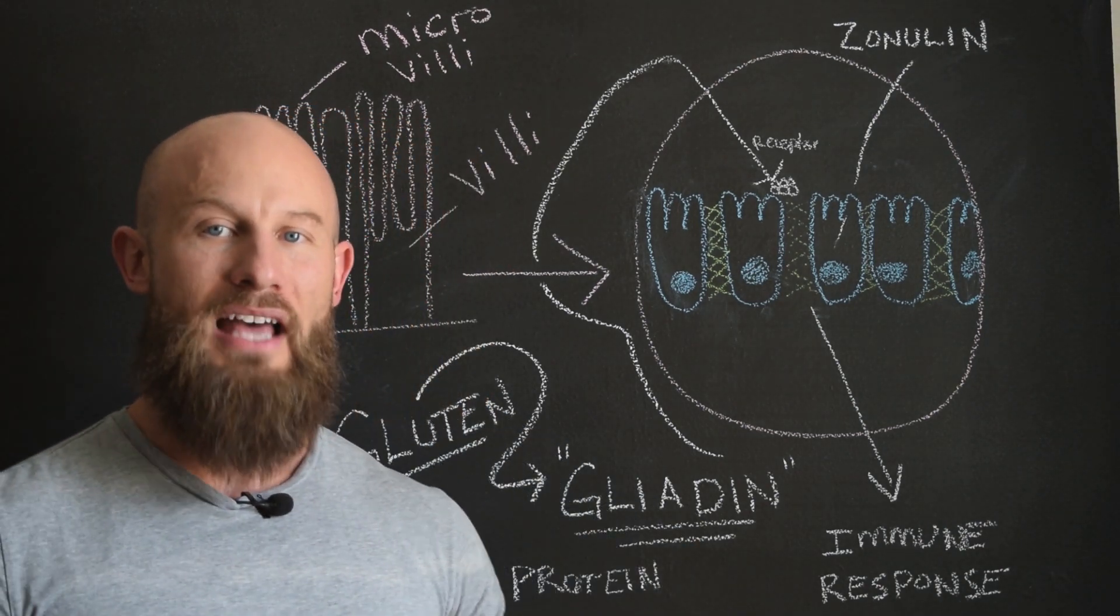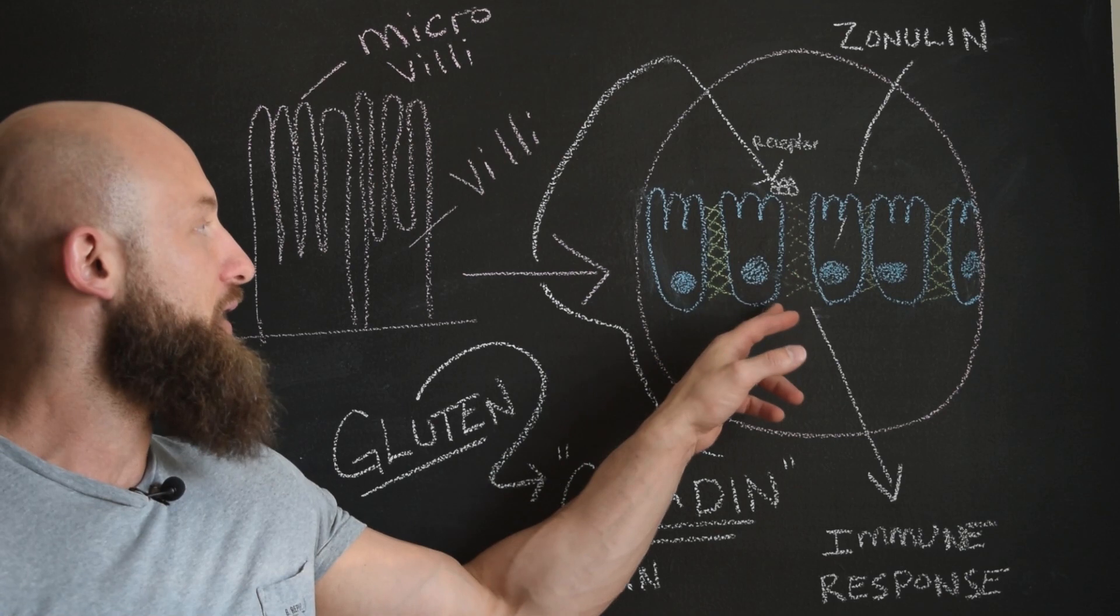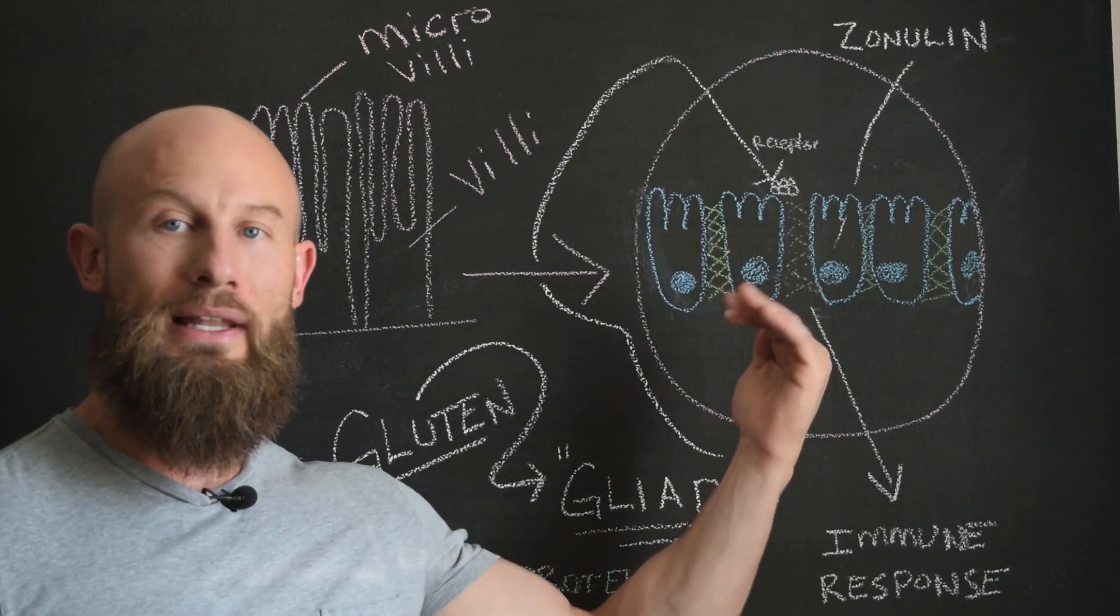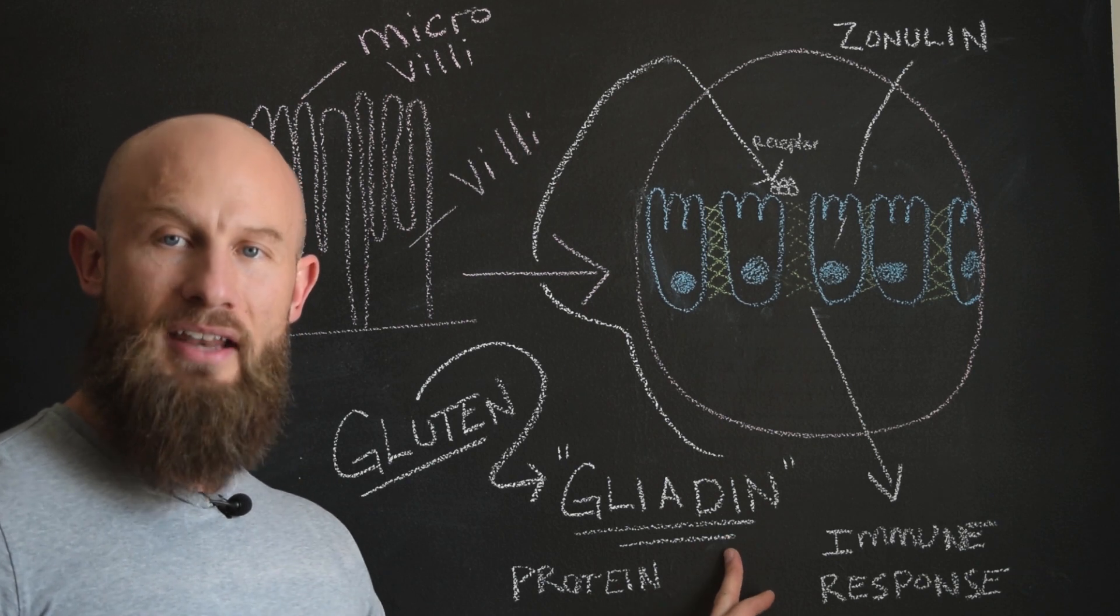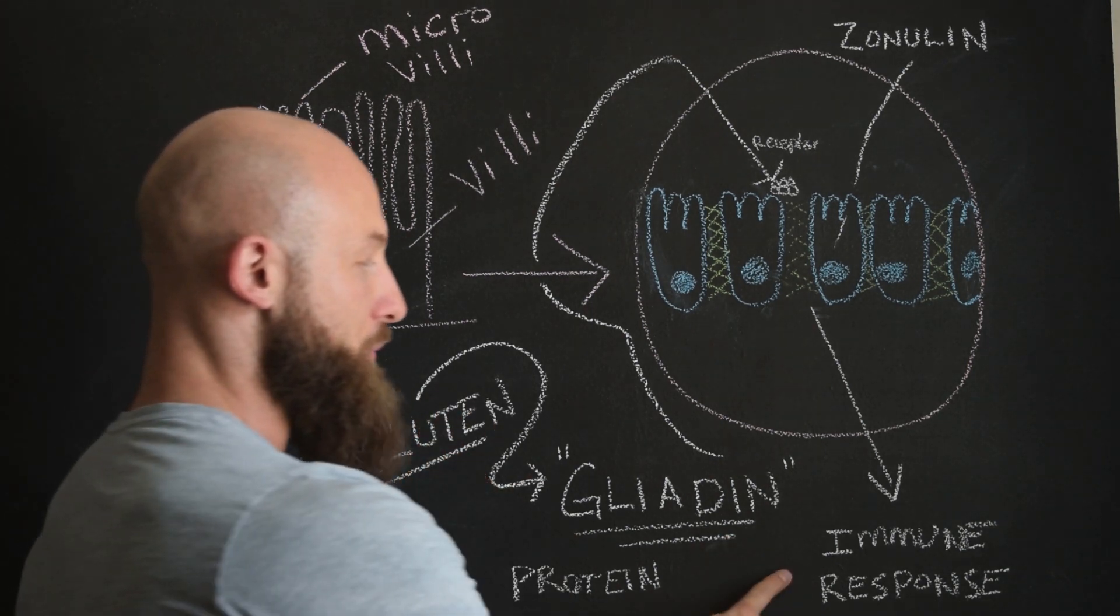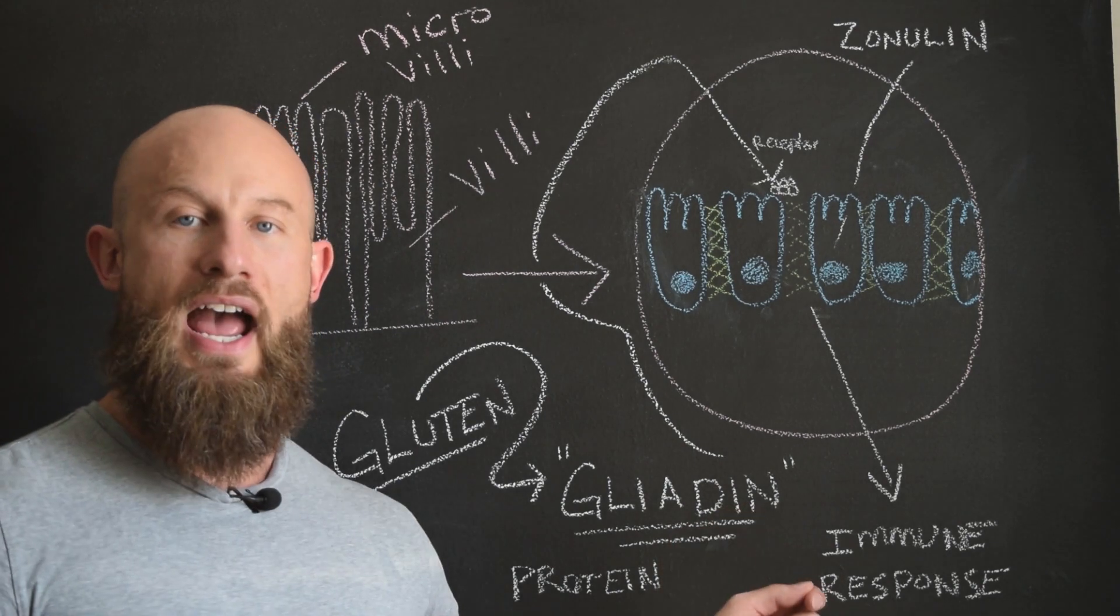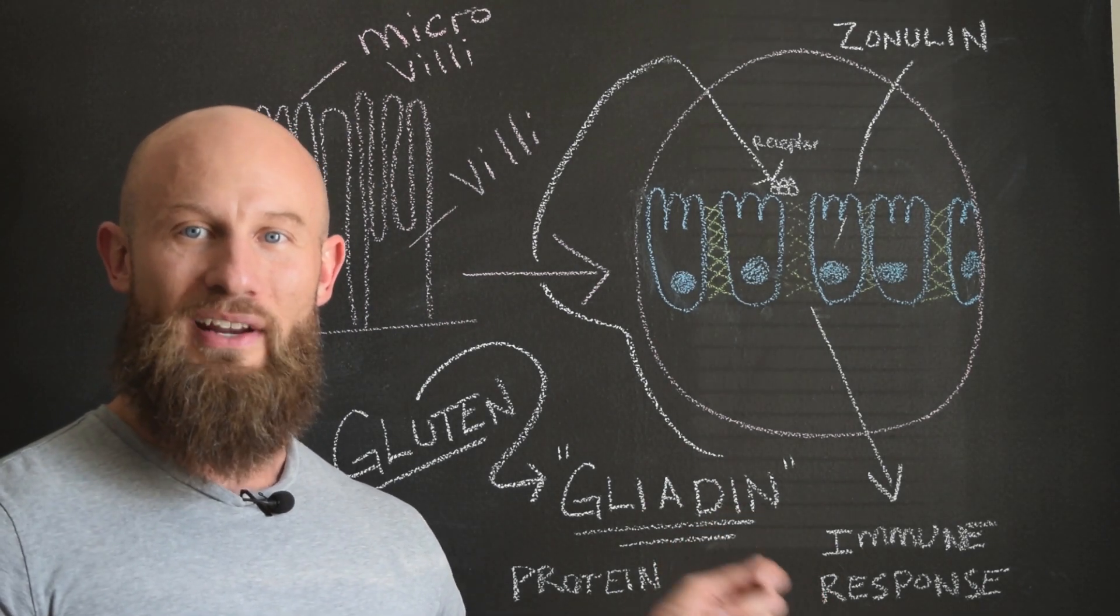And why does that happen? It's like our body's last line of defense. The zonulin opens up and it says, okay, we're going to allow this gluten, we're going to allow this gliadin to enter into our blood for our immune response to attack and kill the foreign invader.